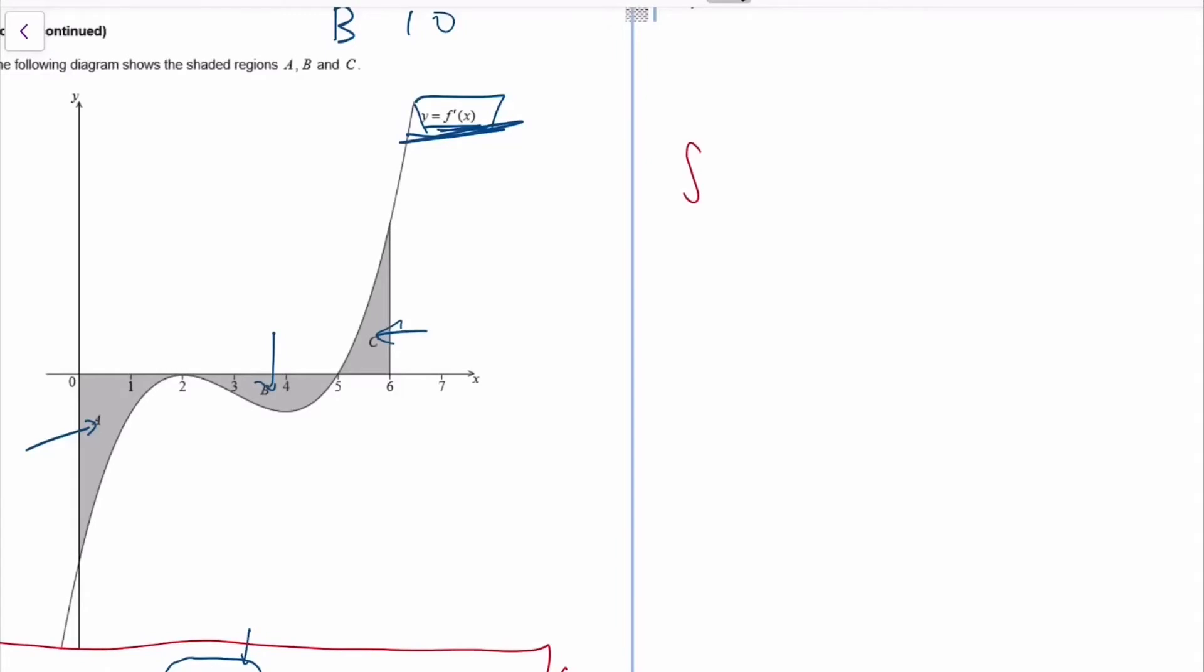They give you some area, right? It is probably about integration, so we can integrate. Let's say we integrate... what do we integrate? We can integrate the curve that we have, so we will integrate f prime x. And let's say we integrate from 0 to 6.